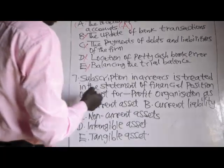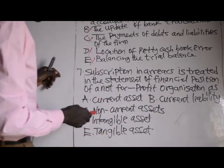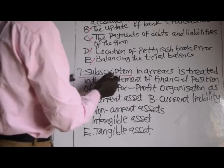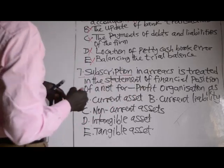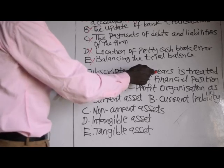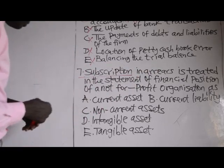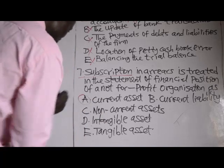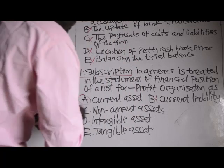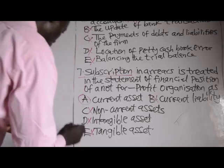Number seven: subscription in arrears is treated in the statement of financial position of a not-for-profit organization as what? Subscription is an income, and income in arrears — outstanding income — is an asset, not a liability. If it were expenses, expenses in arrears would be a liability. So subscription in arrears is an asset. Option A — current asset, yes; B — current liabilities, no; C — non-current asset, no; D — intangible asset, no; E — tangible asset, no. The correct answer is option A.